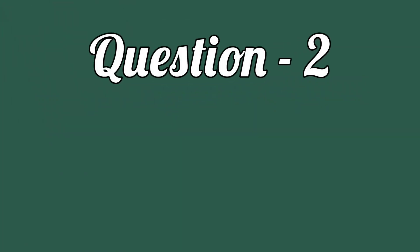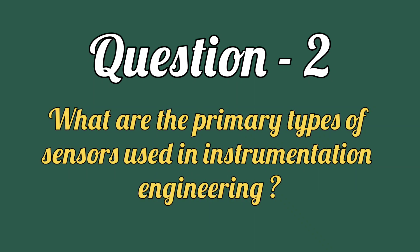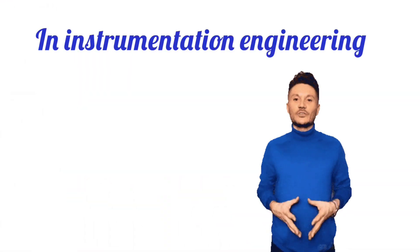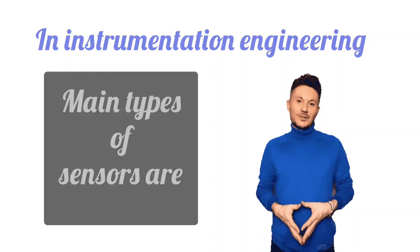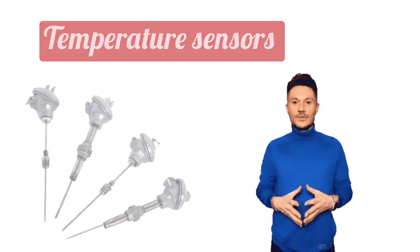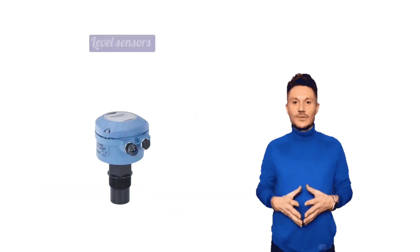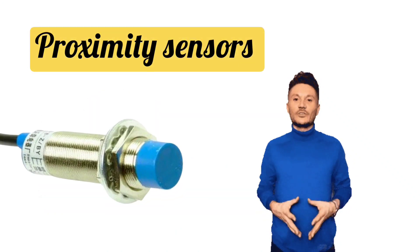Let's take the next question: What are the primary types of sensors used in instrumentation engineering? There are some main types of sensors in instrumentation engineering: temperature sensors, pressure sensors, flow sensors, level sensors, and proximity sensors.